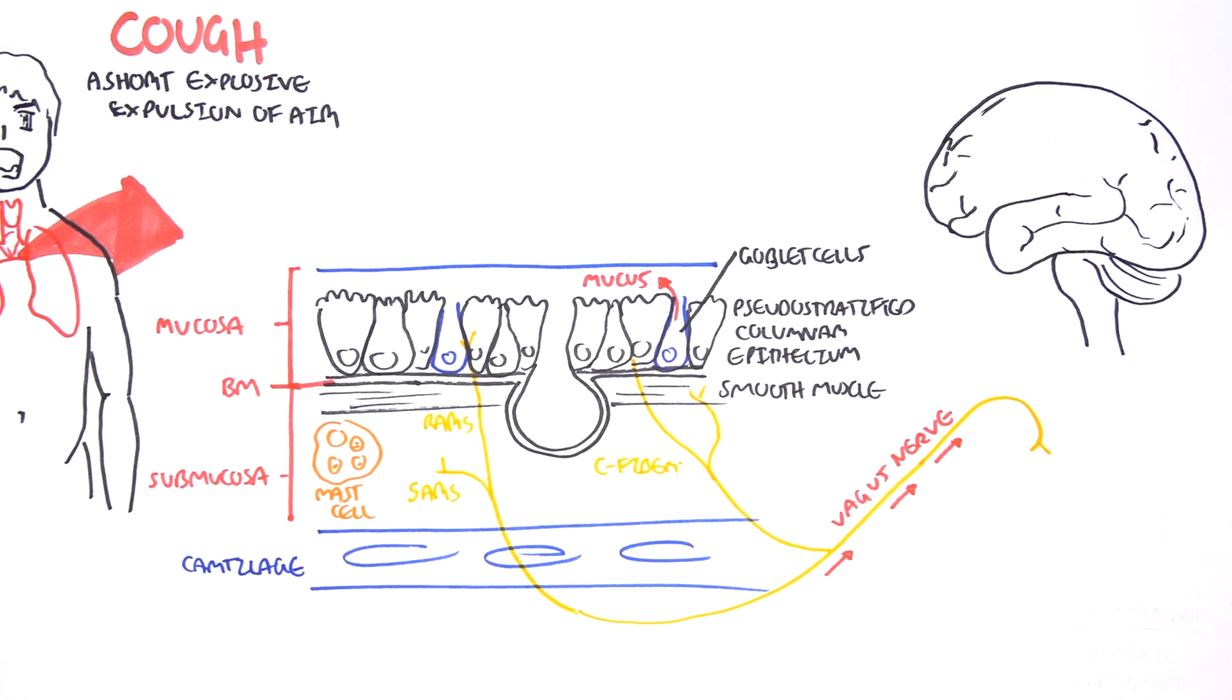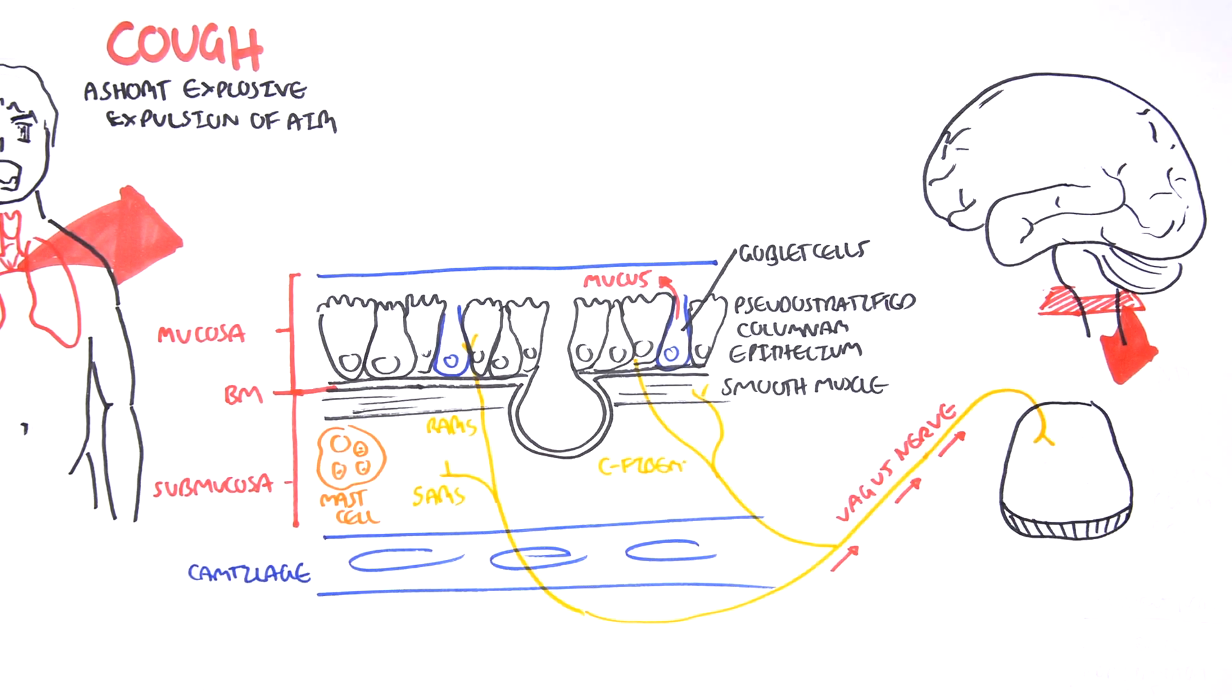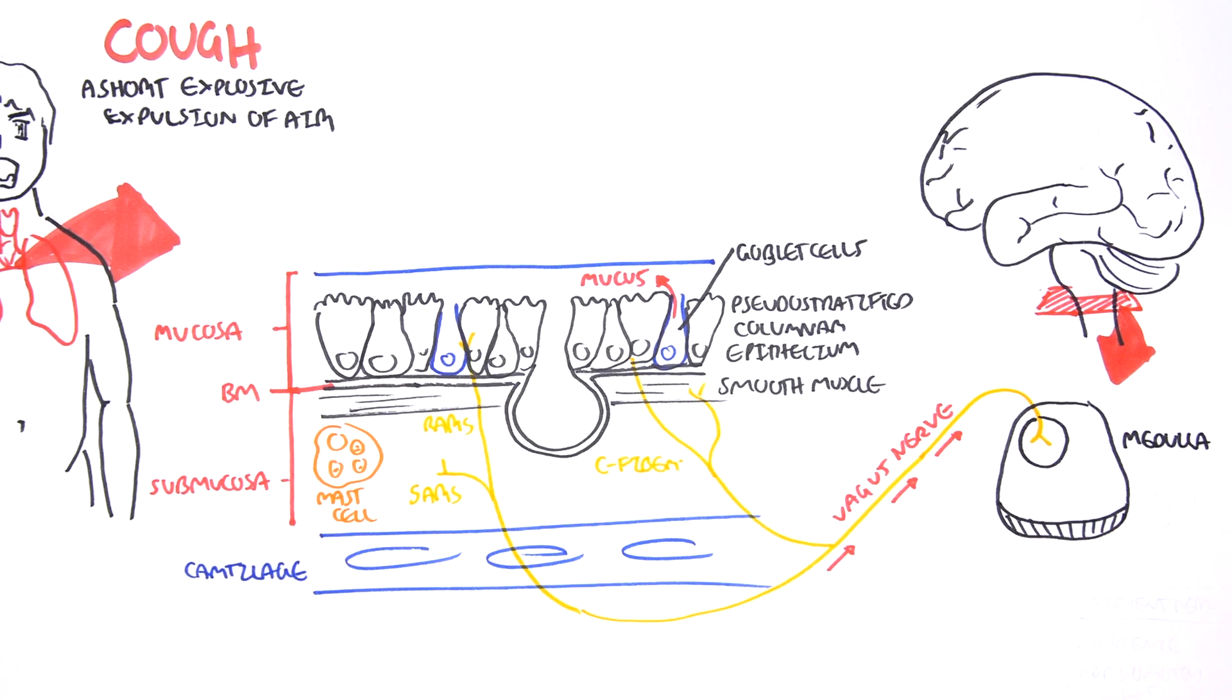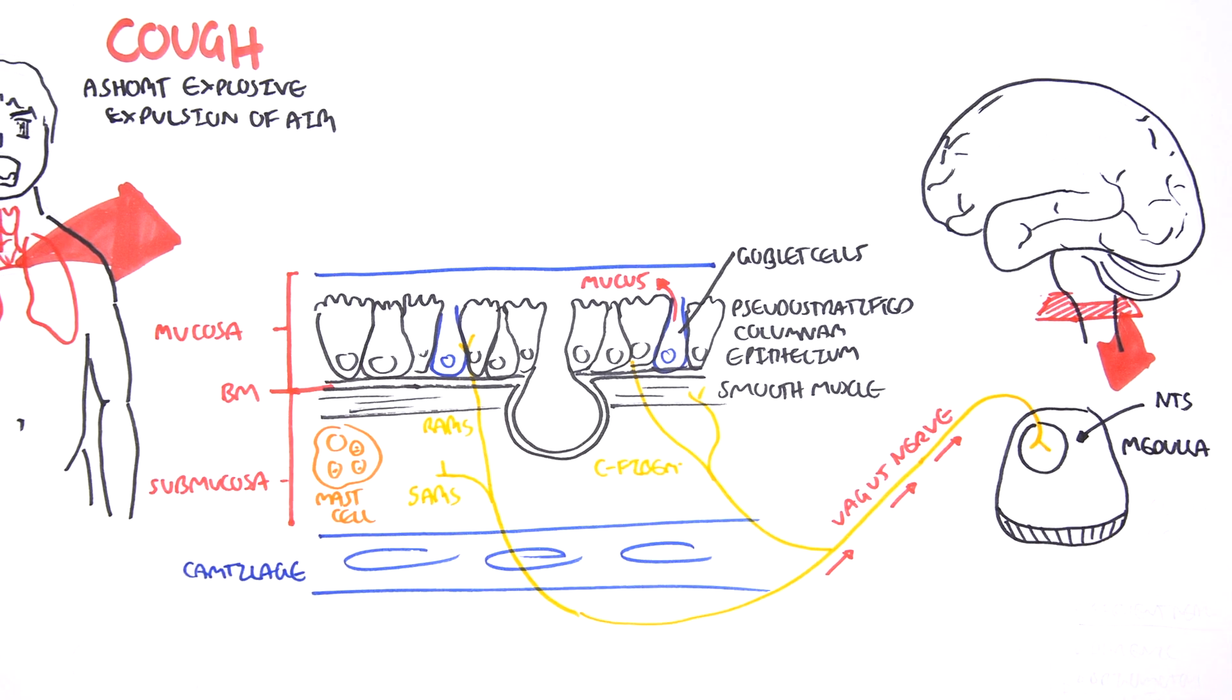It brings the sensory information through the vagus nerve to an area within the medulla known as the NTS, which stands for Nucleus Tractus Solitarius. So vagus nerve brings sensory information from the respiratory tract, upper respiratory tract towards the medulla.